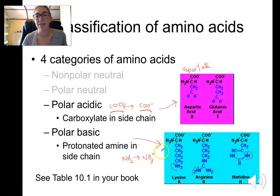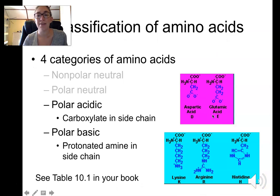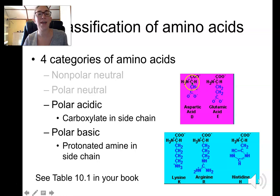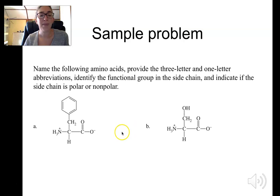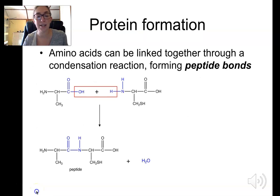An important note: in previous slides the side chains were sticking out to the right, while in the basic amino acid slide they're sticking down. Side chains can be drawn coming off in any direction — there's no standard. When trying to identify an amino acid by its side chain, you first need to find the side chain by orienting yourself: find the center carbon, find the amino group, the carboxylate group, and the free hydrogen — then the fourth group is the side chain.